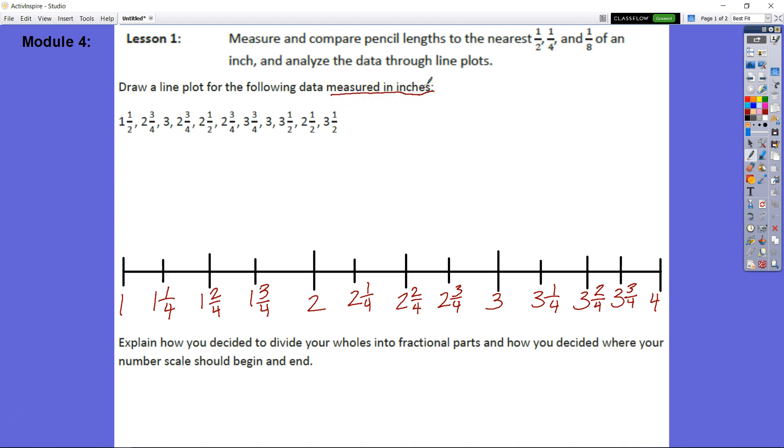So if you notice, I have 1, 2, 3, 4, 5, 6, 7, 8, 9, 10, 11 data points. So in 4th grade, most students learned about a line plot, and we know that we're going to put an X over top of each of these measurement units to represent the piece of data. The first thing I had to do in determining what I was going to use, and this talks about part B here.